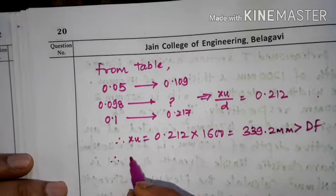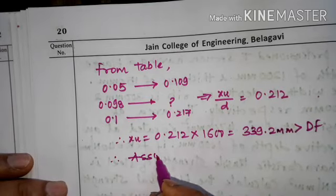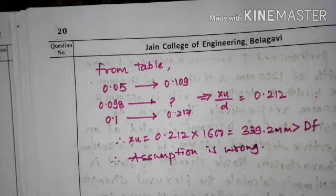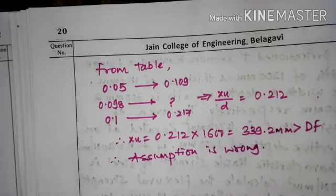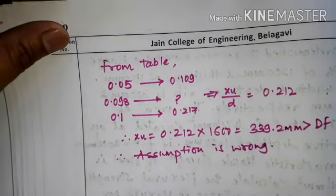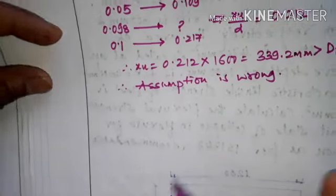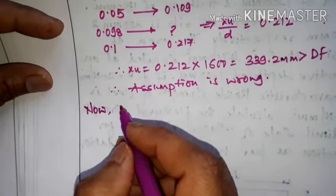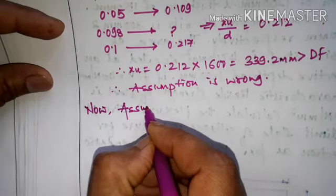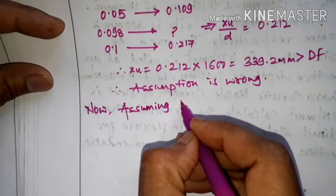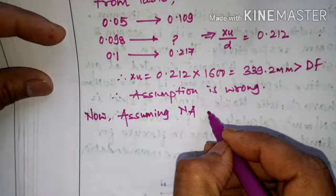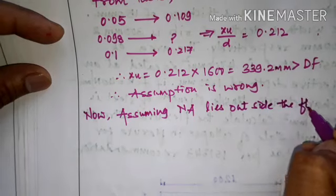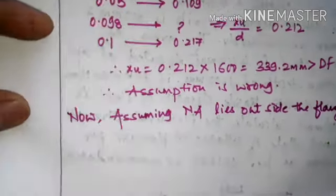Therefore our assumption that the neutral axis lies within the flange is wrong. We now assume the neutral axis lies outside the flange, meaning XU > DF.